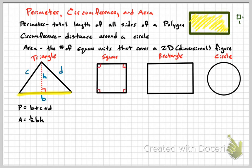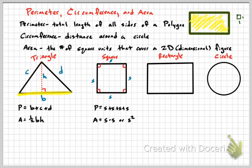A square has four right angles and all four sides are equal. The perimeter of a square is 4s — four times the side length, or s + s + s + s. The area is side times side, or s squared.